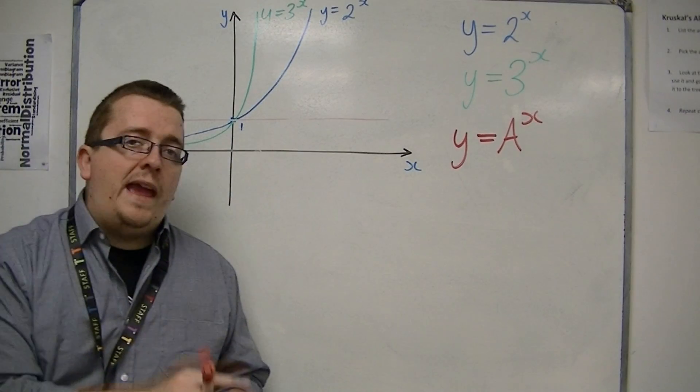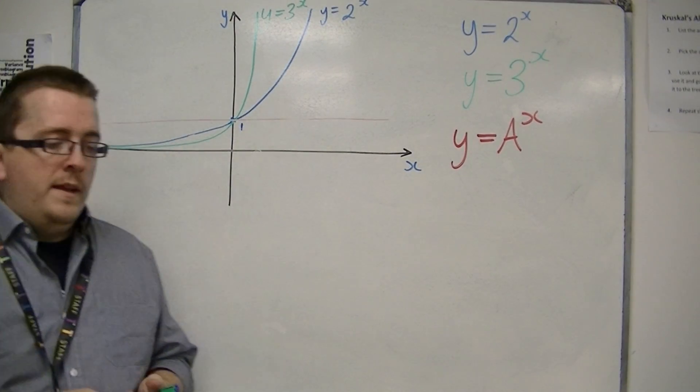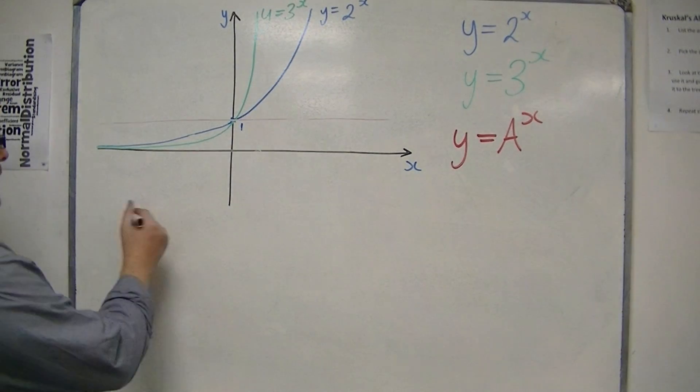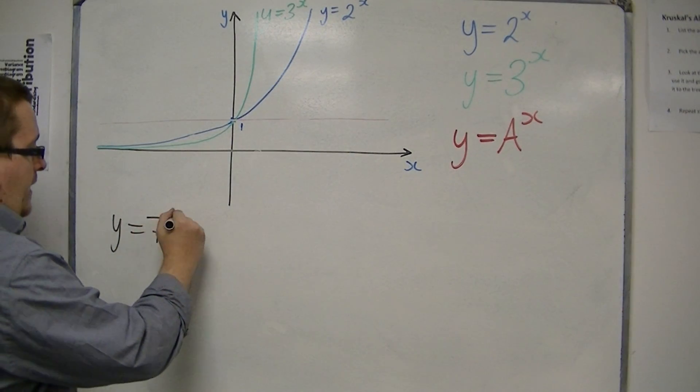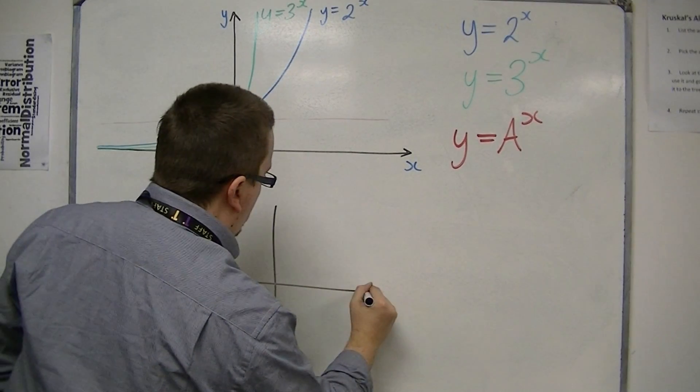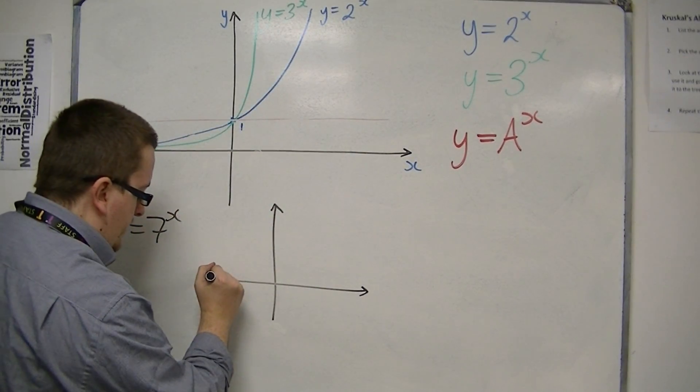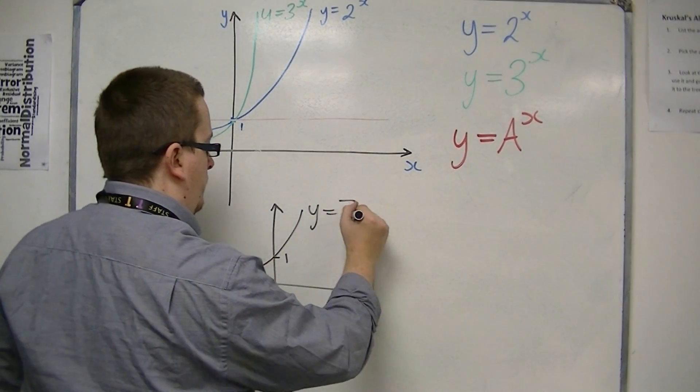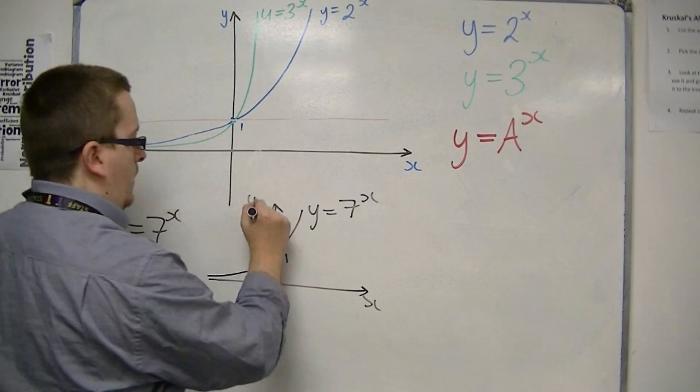So this is how you sketch an exponential curve. If you were just asked in an exam to sketch y is equal to 7 to the x, then the sketch can be as quick as this. And that's it.